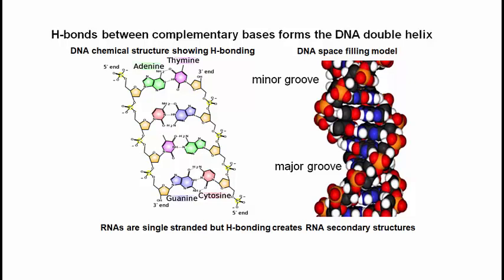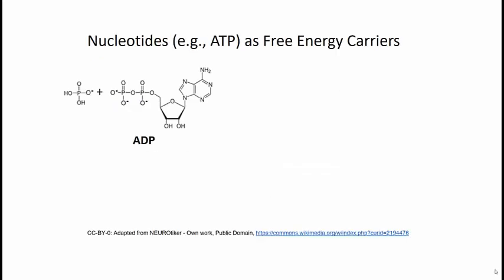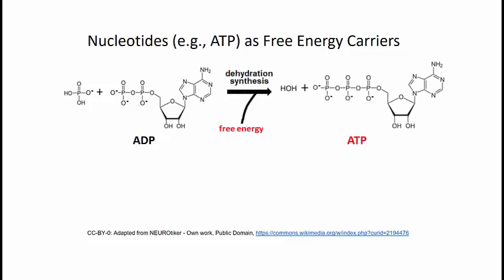We'll return to a consideration of the structure and functions of nucleic acids and proteins several times in this course. I want to leave you with some observations about ATP. ATP is one of the four precursors to RNA synthesis, becoming AMP when part of the chain. Free energy from sunlight, or more directly from food, is used to make ATP, and the energy in ATP — in particular in the phosphoanhydride bonds shown here — is then used to do cellular work.